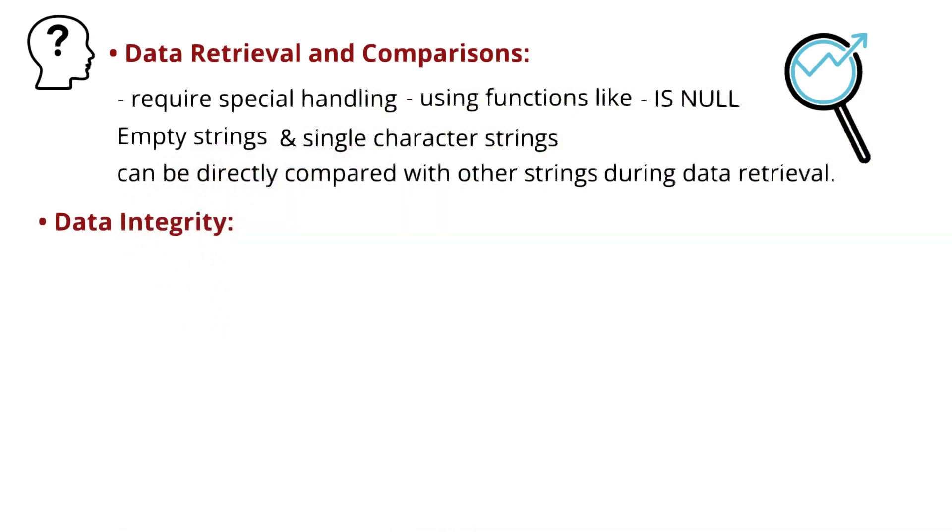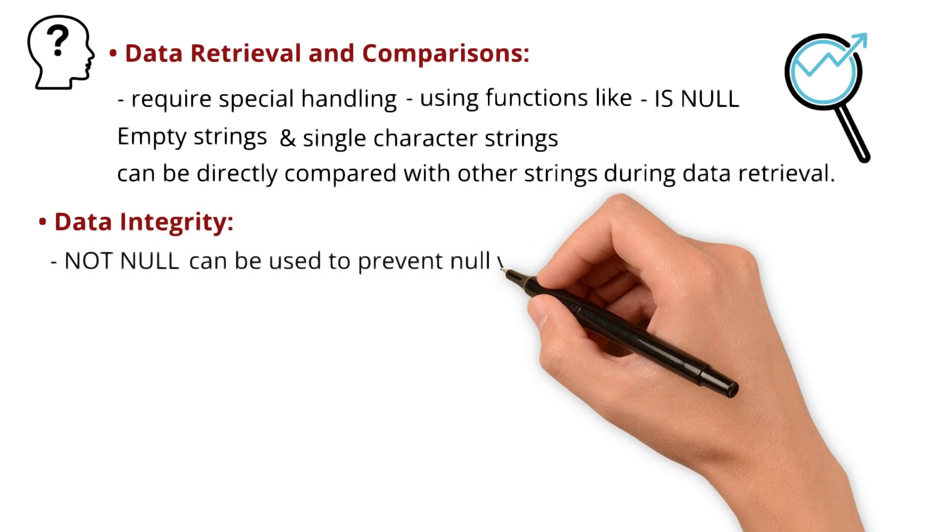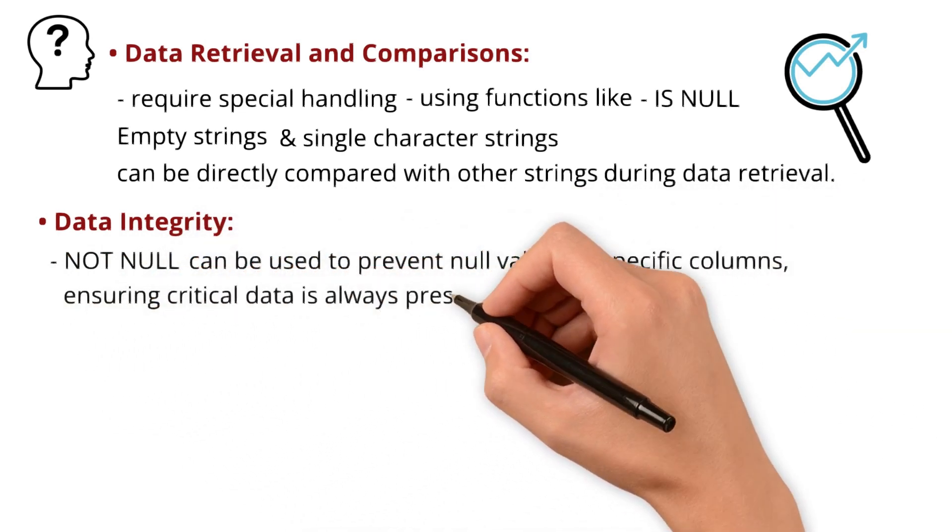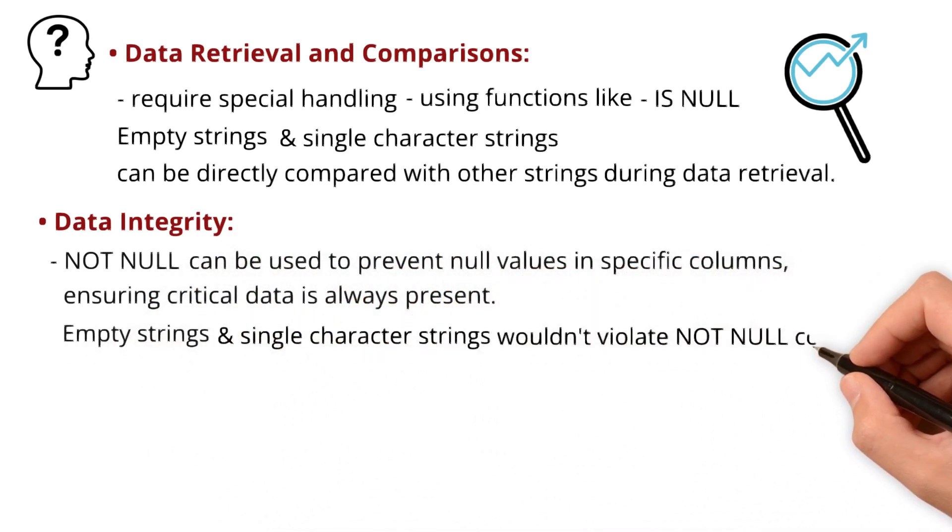Data integrity: constraints like notNull can be used to prevent null values in specific columns, ensuring critical data is always present. Empty strings and single character strings wouldn't violate notNull constraints. We'll talk more about these constraints in the next episode.